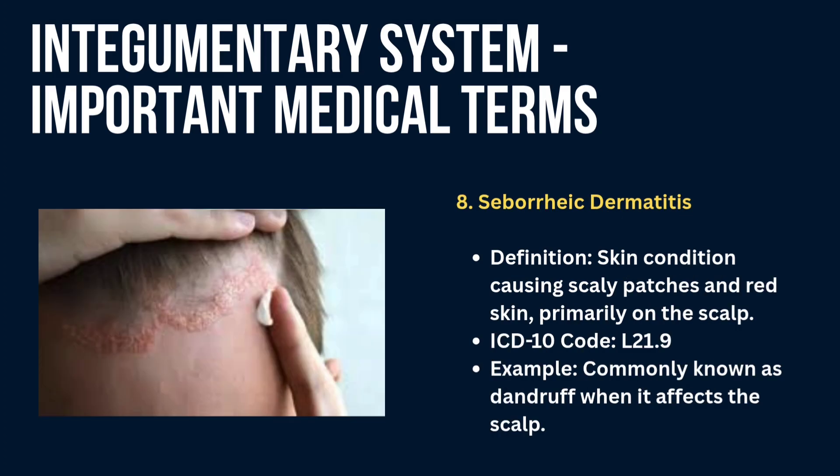Next is seborrheic dermatitis — a skin condition causing scaly patches and red skin, primarily on the scalp. Example: commonly known as dandruff when it affects the scalp. You can see the image to understand how seborrheic dermatitis looks.